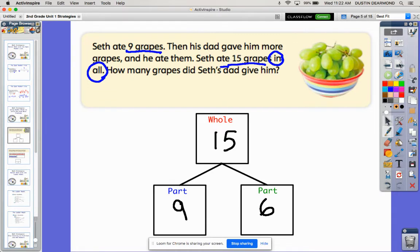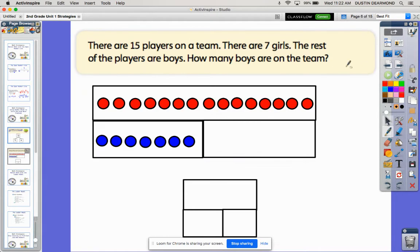Now let's look at one more example, still thinking about number bonds. Here I drew a picture. Some of us might need to draw a picture, and that's fine. I drew a picture and it's set up like a number bond. Let me read the problem.